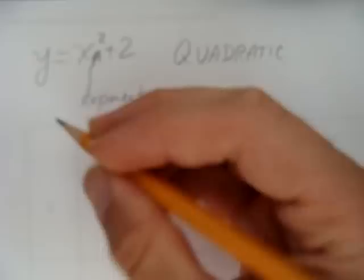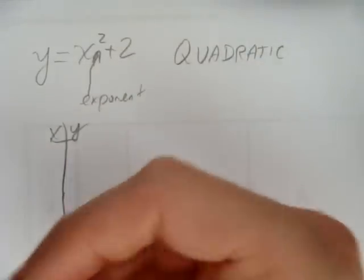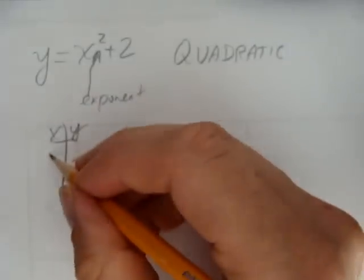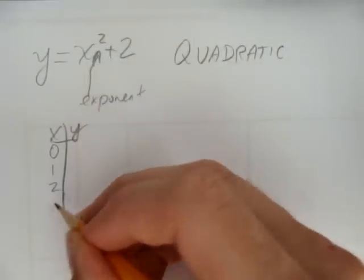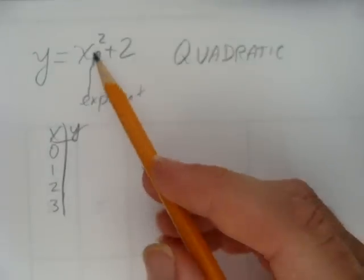But let's look at it in other ways. Let's start again with a table like we did with linear and pick some x values. You can pick any x values you want. You can pick a billion, a billion and 1, a billion and 2. But why not make your life easy? Pick 0, 1, 2, 3 and sub them in.